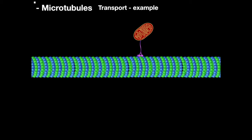An example of these proteins is the transport of mitochondria, lipids, proteins, and other organelles on the axon of neurons.